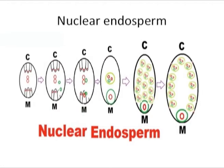In the nuclear endosperm, the triploid nucleus within the embryo sac undergoes repeated divisions forming numerous nuclei but without forming cell walls between the nuclei. In the absence of the cell wall, the endosperm becomes multi-nucleated.